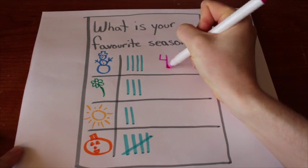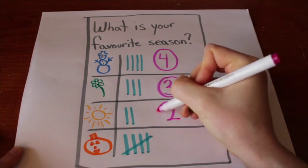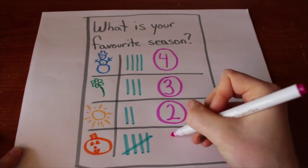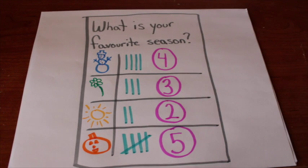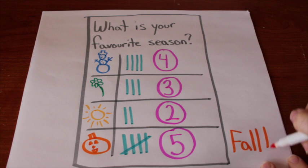Miss Brown then counts the ticks for each season. Since five students chose Fall, Miss Brown knows this is the most popular season in her class. She will be planning a spooktacular Fall party for her students.